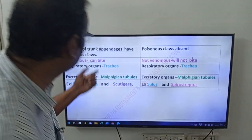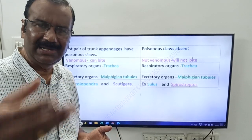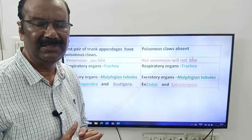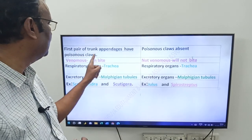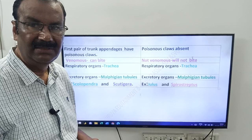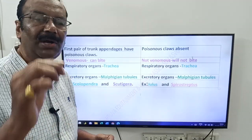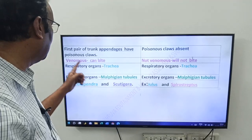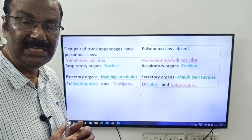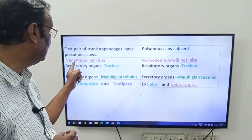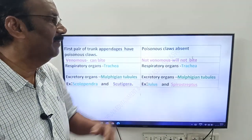Another important point: the first pair of trunk appendages in centipedes have poisonous claws. Millipedes have no poisonous claws. Because centipedes have poisonous claws, they are venomous and can bite — like Scolopendra. Millipedes are not venomous and will not bite.